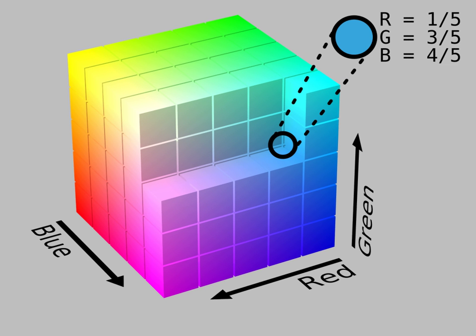The complete specification of an RGB color space also requires a white point chromaticity and a gamma correction curve. As of 2007, sRGB is by far the most commonly used RGB color space. RGB is an abbreviation for red-green-blue.